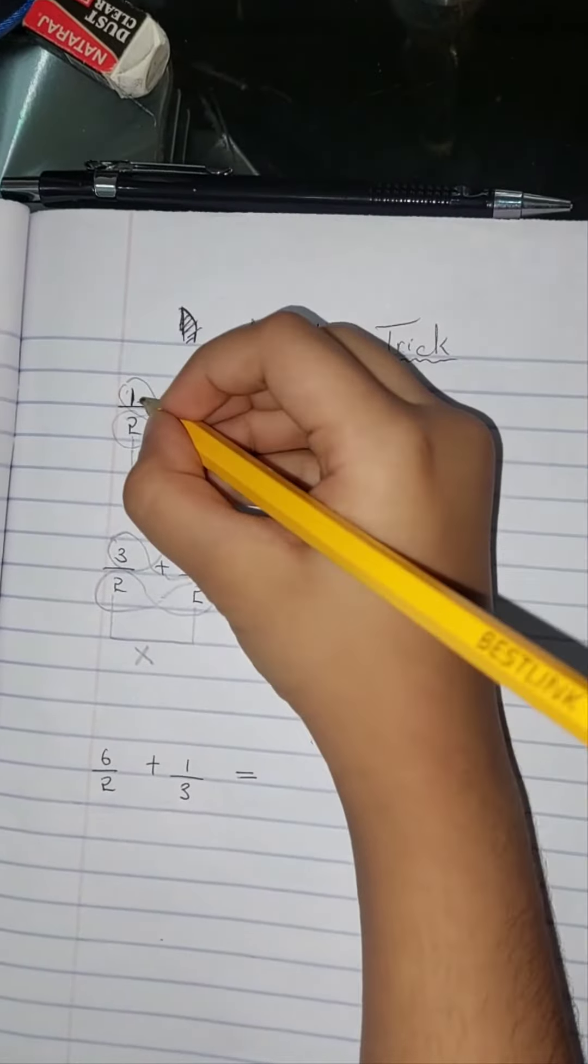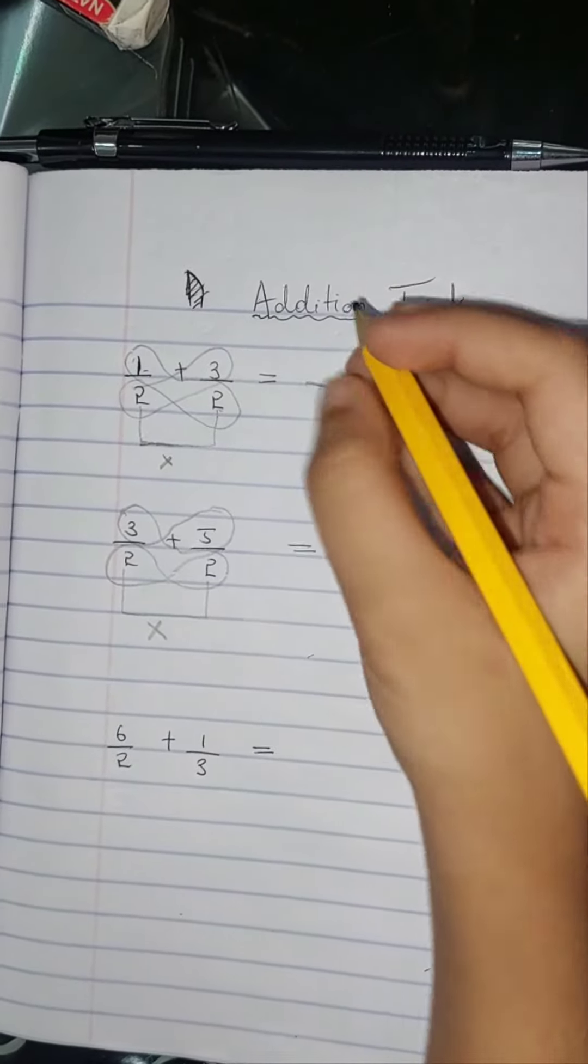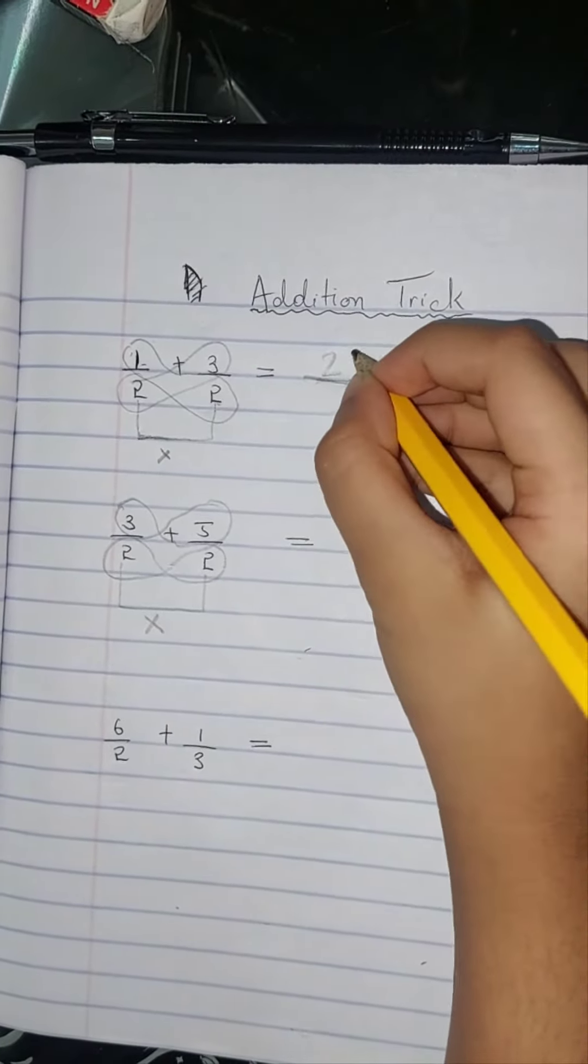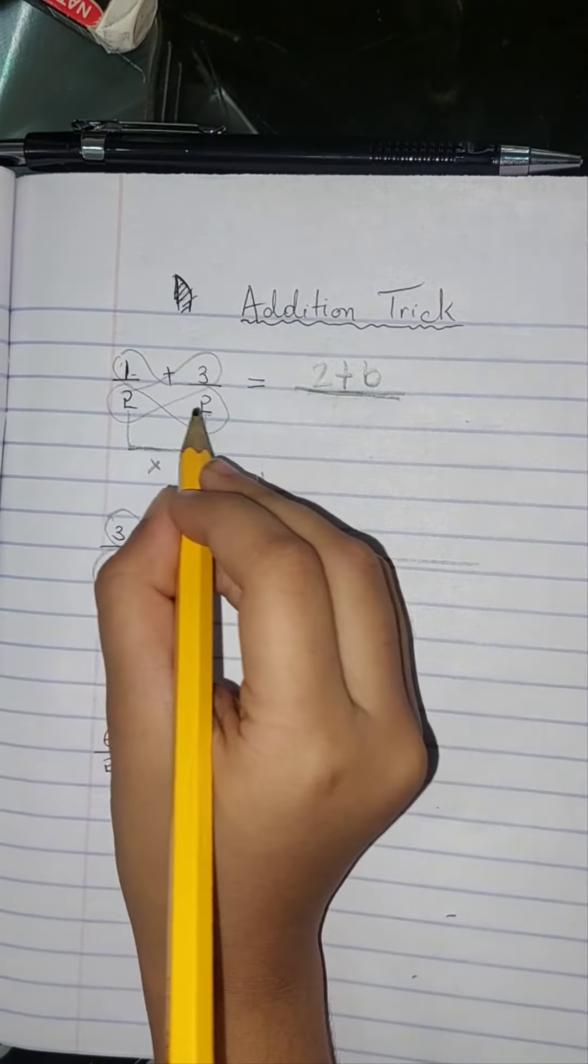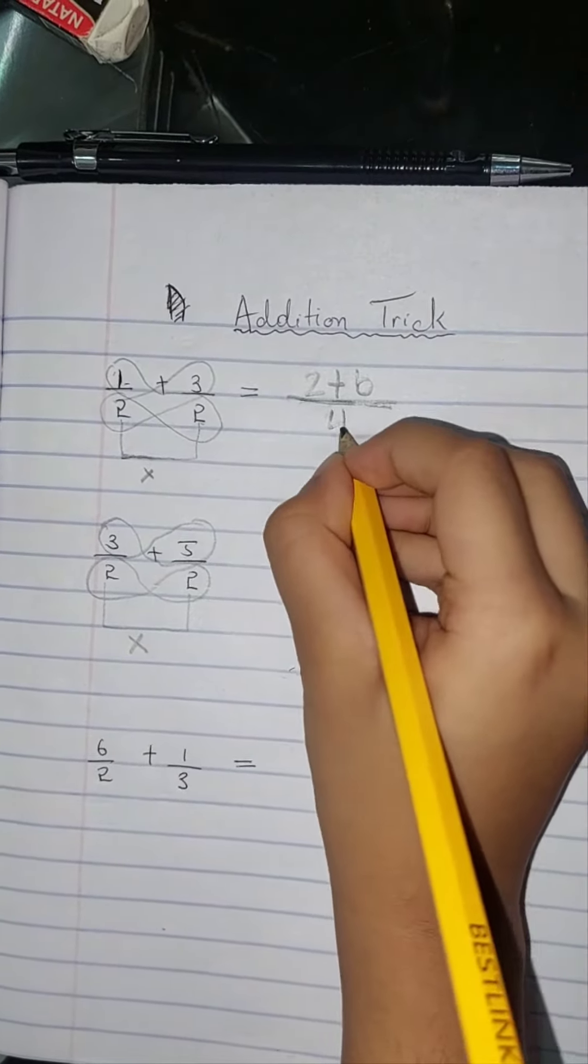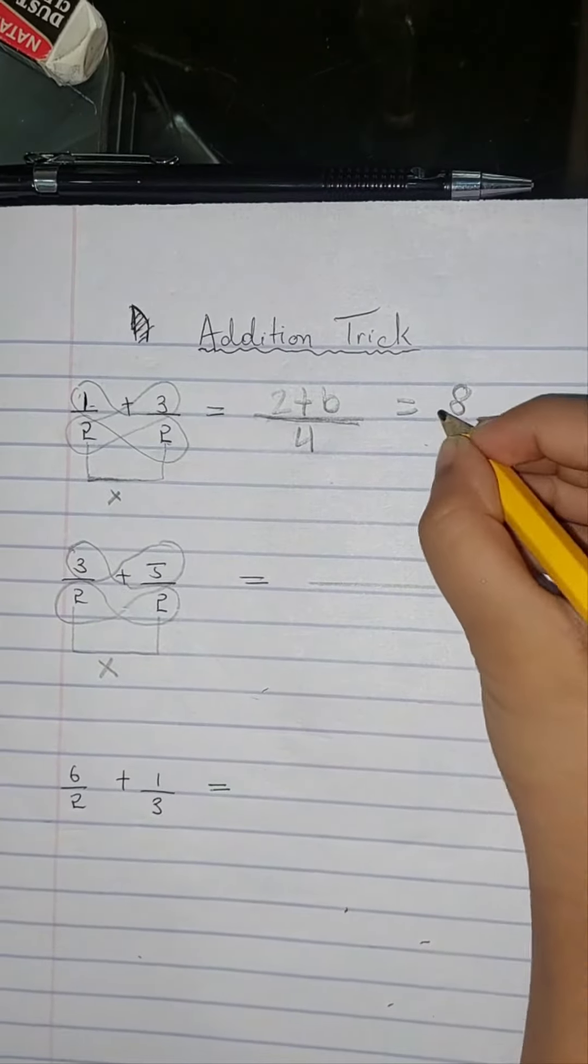Two times one, then you do two times three equals six, then you do two times two equals four. That equals to eight over four.